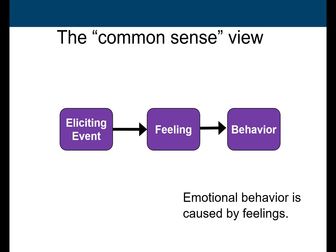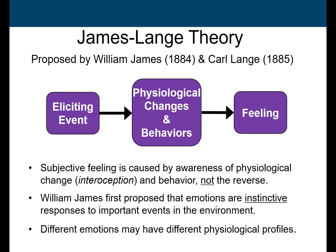The common-sense view of an emotion is: some eliciting event happens, then you have a feeling, and that causes a behavior. William James and Carl Lange proposed the James-Lange theory — some eliciting event causes a physiological change and a change in behavior, which then leads to a feeling. They argued that subjective feelings are caused by the awareness of physiological change — they called this interoception — not the reverse.